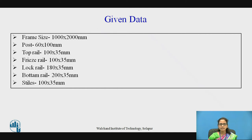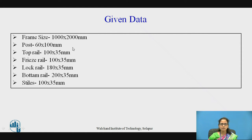So this is the given data. The frame size, that is the door opening, is given as 1000 mm by 2000 mm. Next is the post: 60 by 100 mm. Top rail: 100 by 35 mm. The freeze rail: 100 by 35 mm. The lock rail: 180 by 35 mm. Bottom rail: 200 by 35 mm. And finally, the stiles — the vertical members — are 100 by 35 mm. These are the inputs of the door frame.